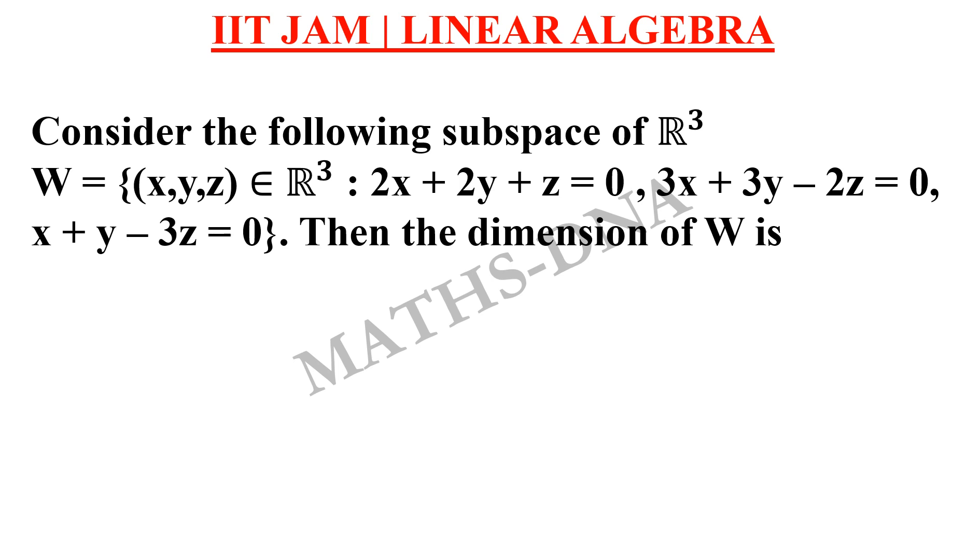each year a question is based on this dimension. Now the options over here are (a) 0, (b) 1, (c) 2, and (d) 3.